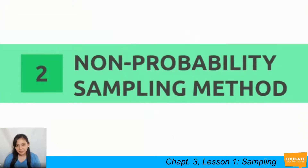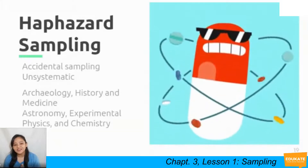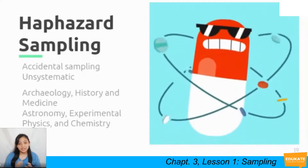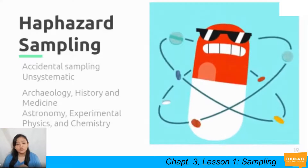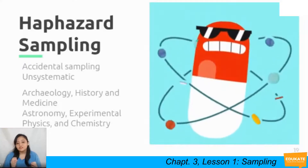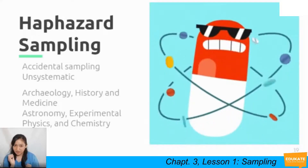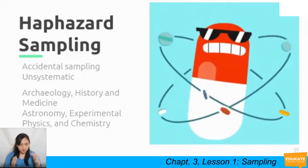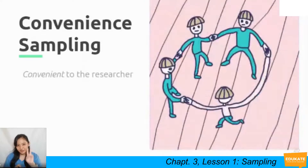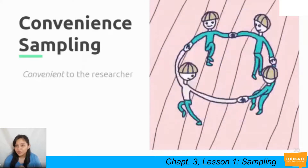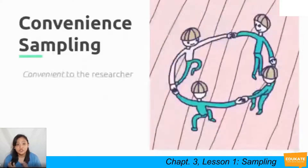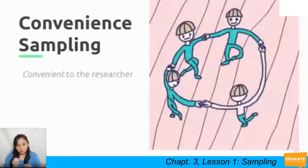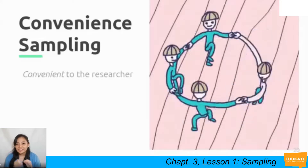Under non-probability sampling, the first method is haphazard or accidental sampling — it is unsystematic. Some disciplines like archaeology, history, and medicine draw conclusions from whatever items are available. Disciplines like astronomy, experimental physics, and chemistry often do not care about the representativeness of their specimens. Second is convenient sampling — one of the most popular methods, it is convenient to the researcher, drawing samples from a circle of friends and acquaintances.